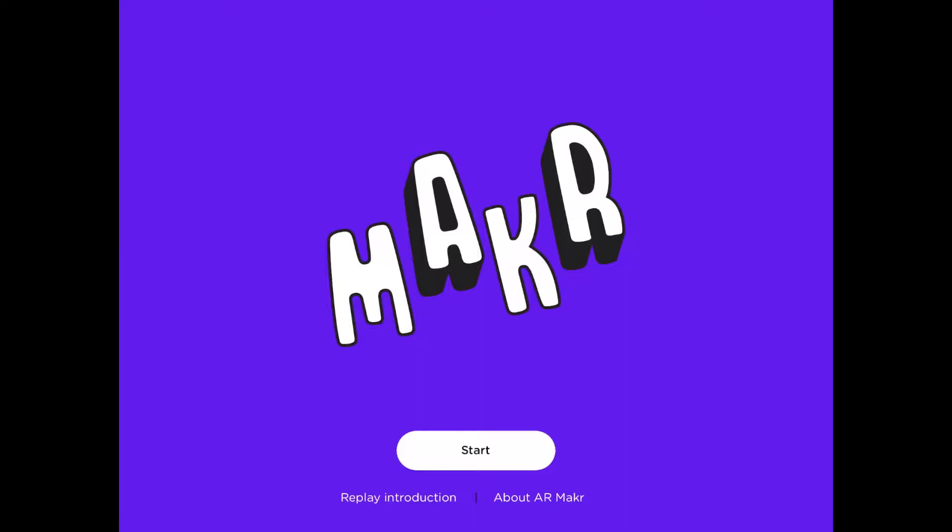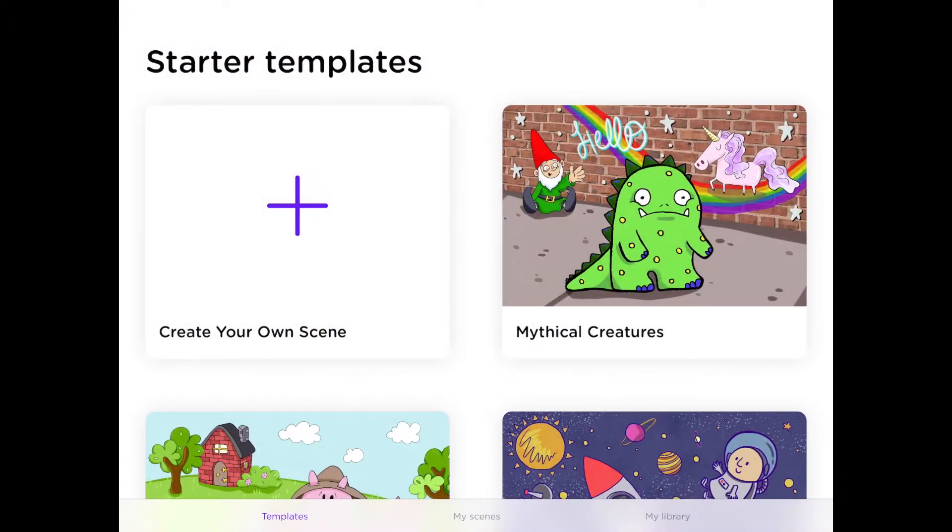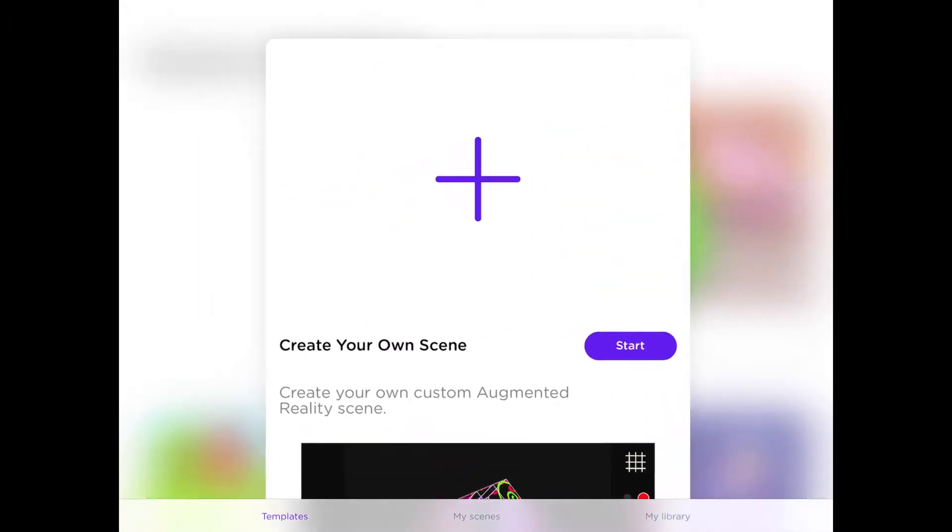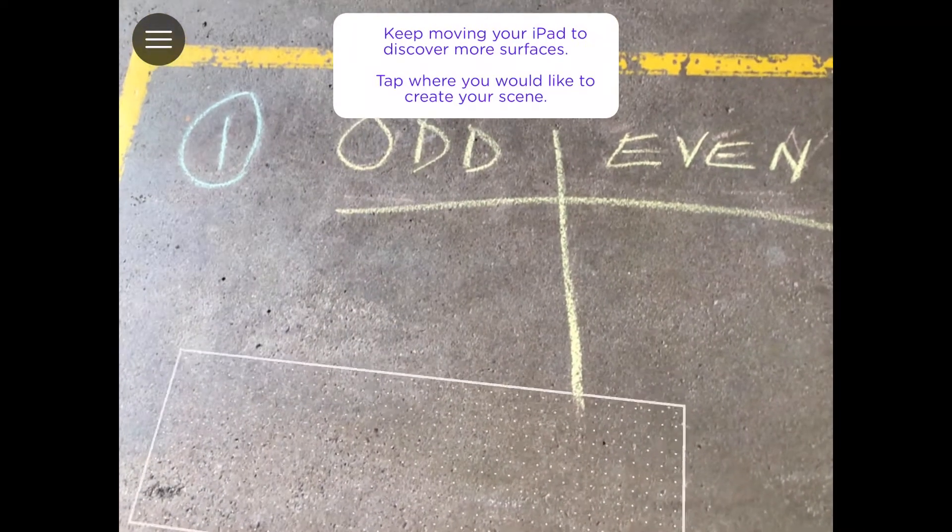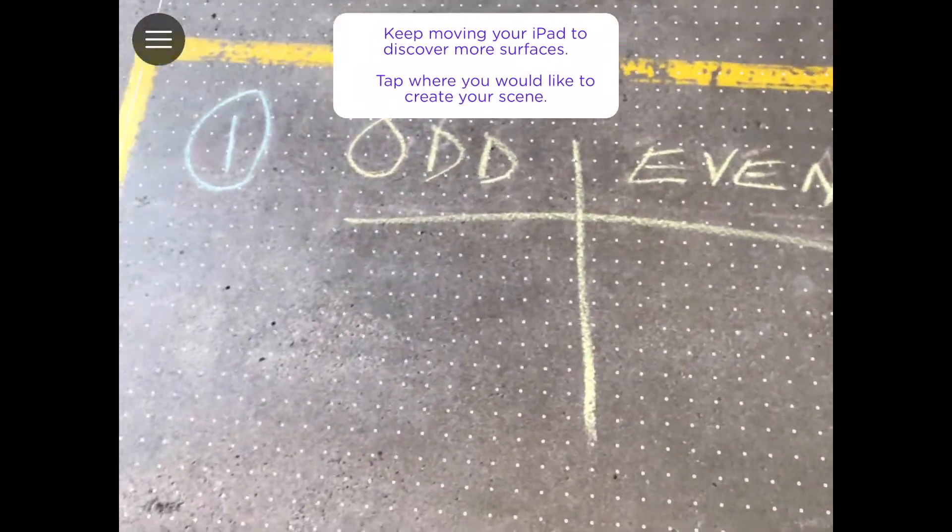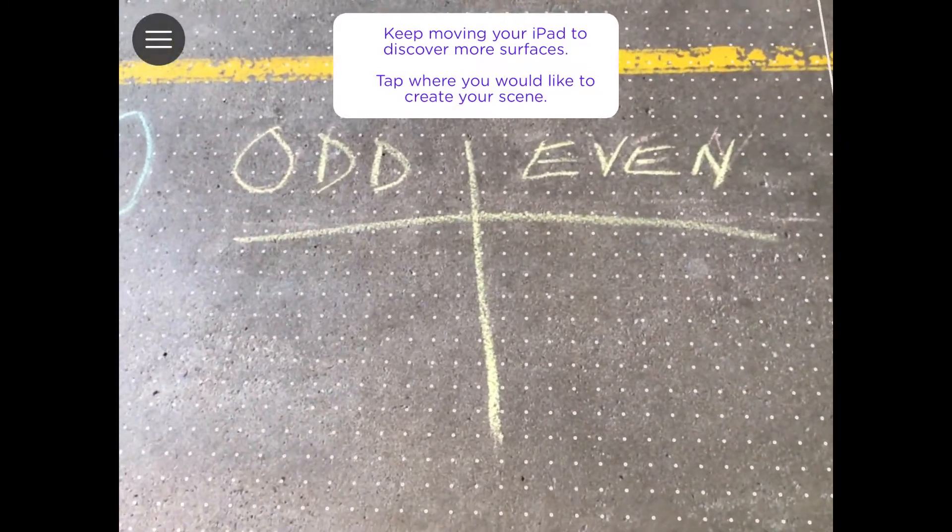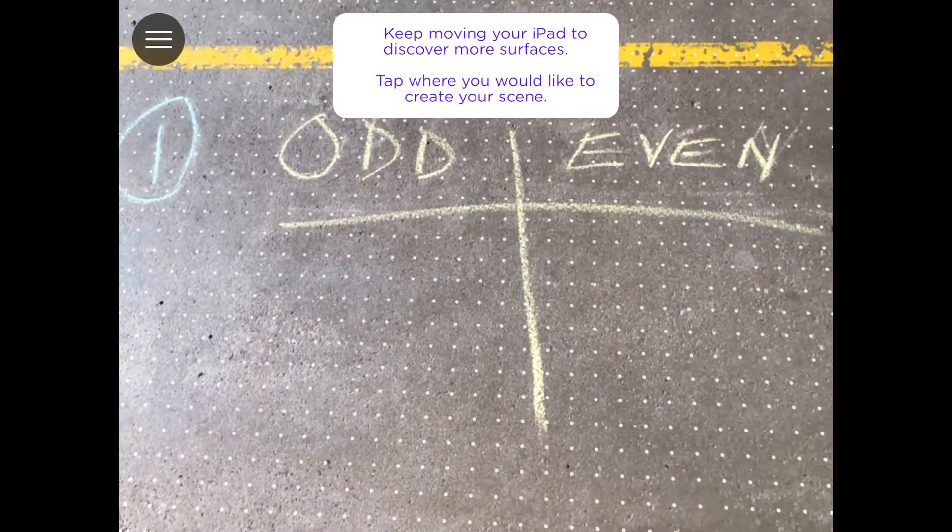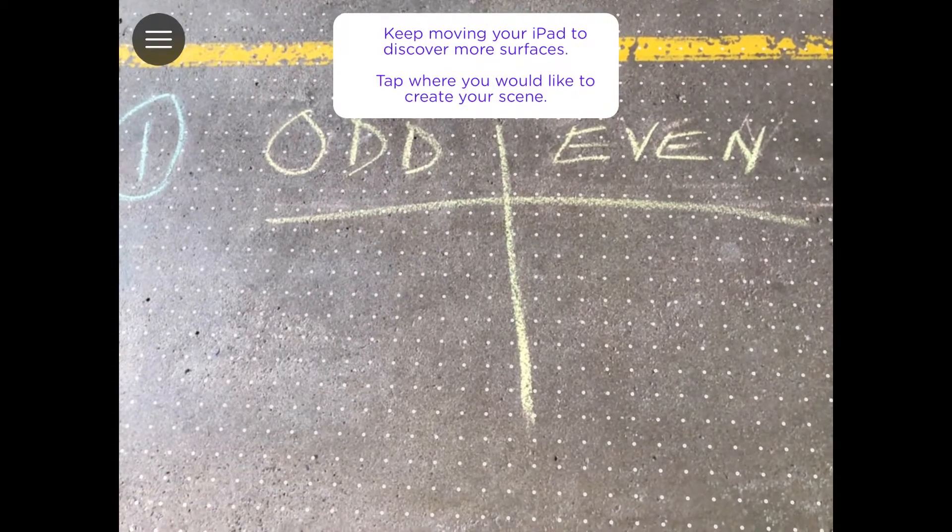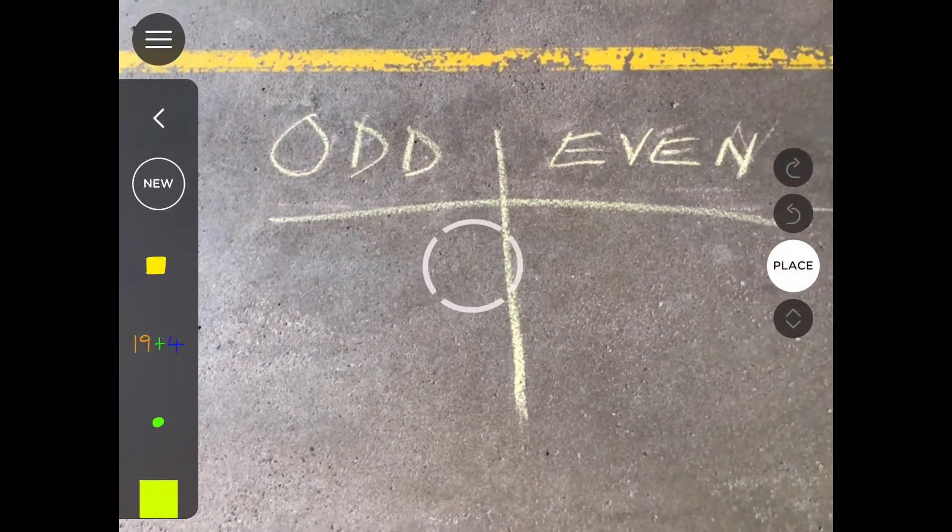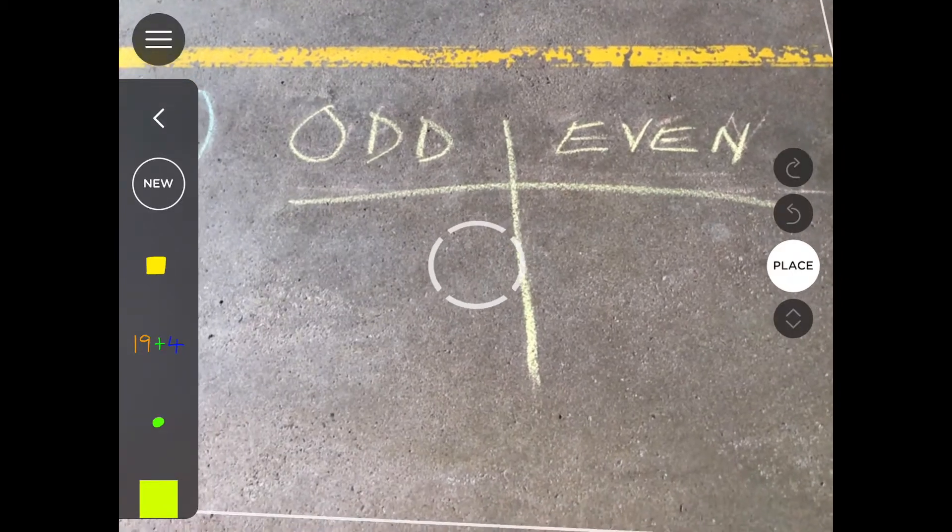So we're going to select AR Maker, then select start, push the cross and then start again. Now when the app first starts you just need to scan the app around. You'll see a little area there where the dots are. I normally get students just to select that with their thumb.